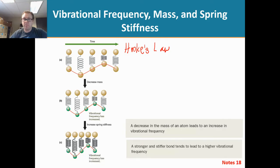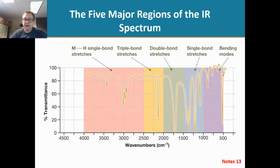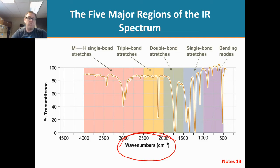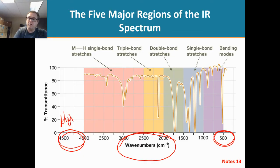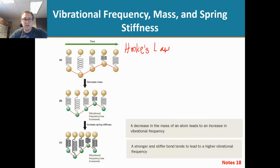The frequency is really important because when we look at an IR spectrum, those are inverse wave numbers which can be correlated to frequency. So we have high frequency over here and low frequency over here, which corresponds to high energy and low energy. We're going to use Hooke's Law to help us understand that.